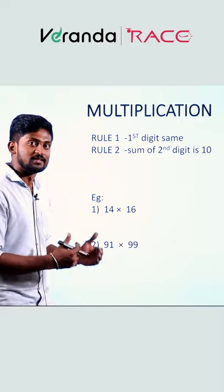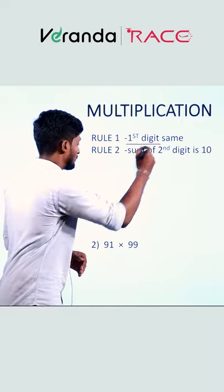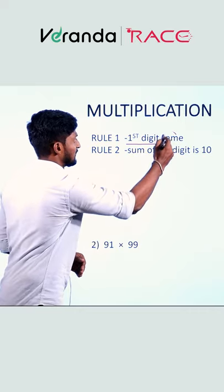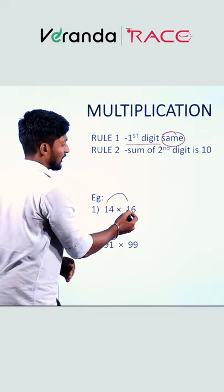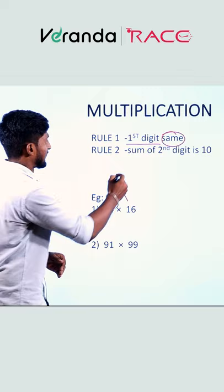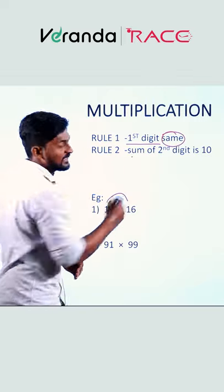Let's take a look at multiplication. Rule number 1: First number is same. Here is 1 and here the first digit is 1. Second rule: Sum of second digit is 10.